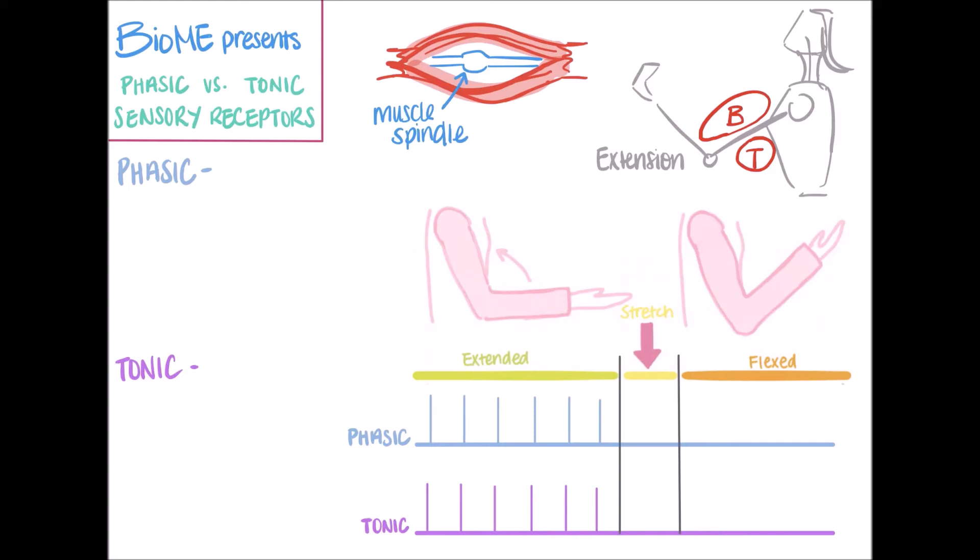And so we can split up the movement into three parts. First, the forearm is extended but unmoving, as shown here in the first section. In the second part, the forearm is moving from the extended to the flexed position. And lastly, the forearm is flexed but it's unmoving.